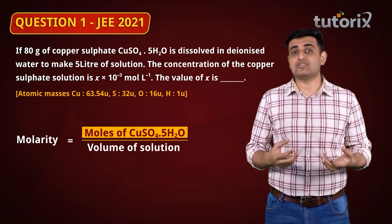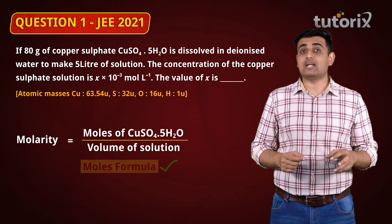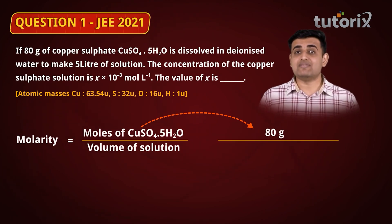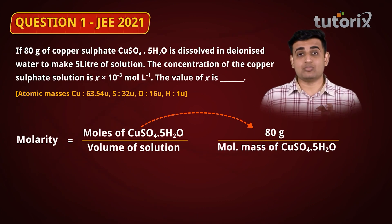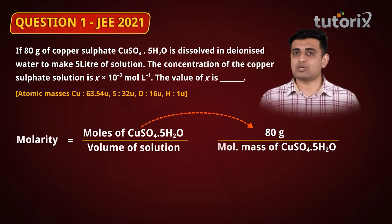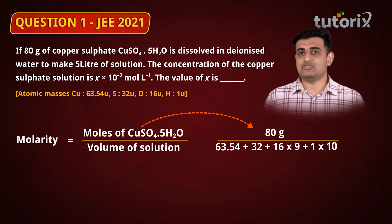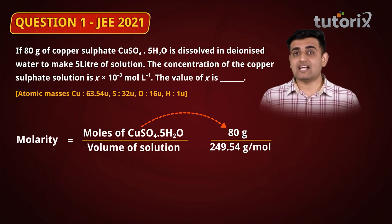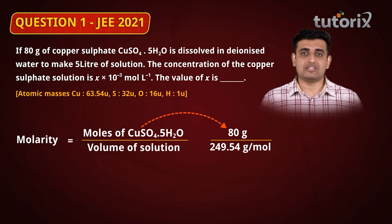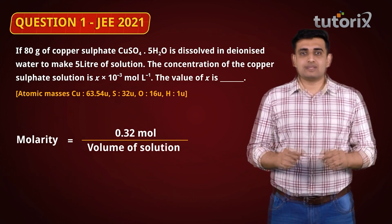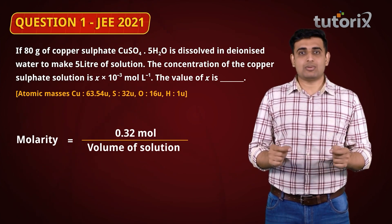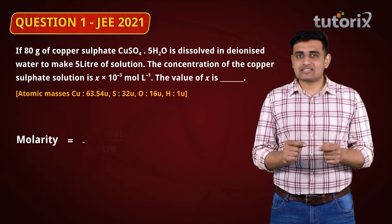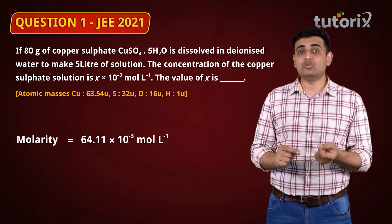To get the number of moles of copper sulphate, we use the moles formula: moles = mass given / molecular mass. The mass given is 80 grams, and the molecular mass of hydrated copper sulphate is calculated by adding the atomic masses of copper, sulphur, oxygen, and hydrogen, which comes out to be 249.54 grams per mole. So the number of moles of hydrated copper sulphate is 0.32 moles. Dividing by 5 litres gives a concentration of 64.11 × 10⁻³ moles per litre.